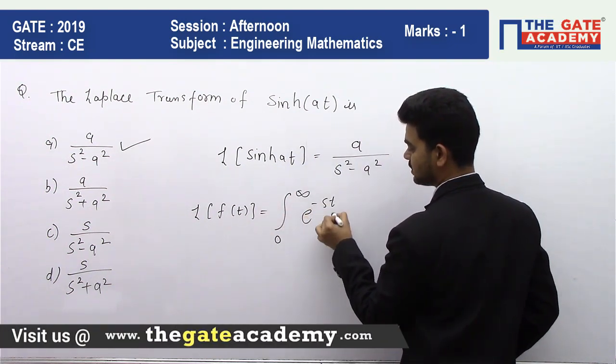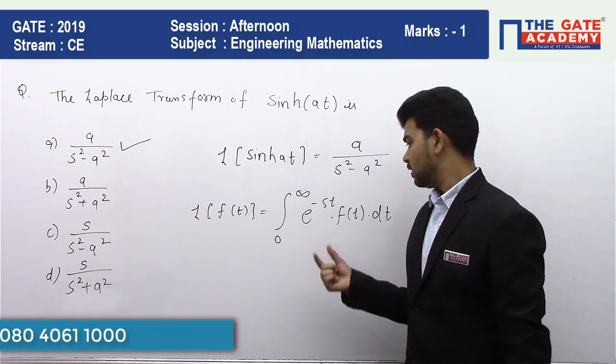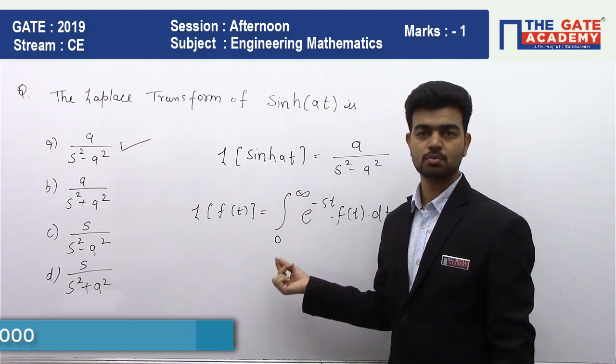Whatever function you are finding, you have to put here. So sinh(at) you will put here and you will solve this whole integration from 0 to infinity and you will get a divided by s squared minus a squared.